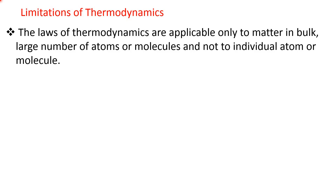Chemical thermodynamics will not give you any idea about the internal structure of an atom, properties of an electron, internal structure of a molecule — no. Statistical thermodynamics gives such ideas, but we will limit our discussion to chemical thermodynamics, which does not deal at the microscopic level. It will not tell you the energy of an electron or proton individually — it will tell you the energy of a bulk system of a large number of particles.